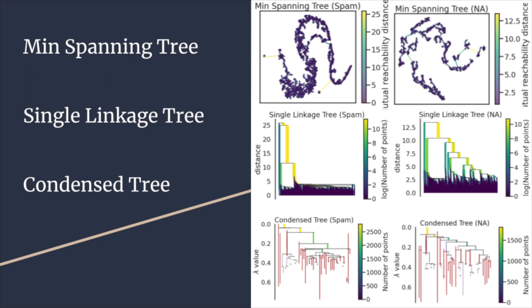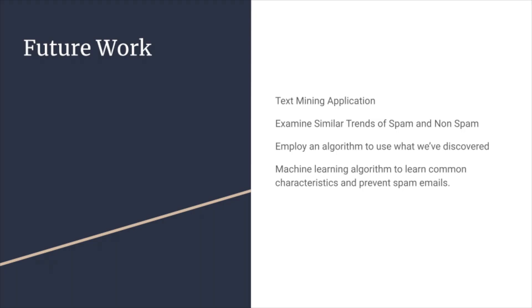The major takeaway for all of these trees is that since there are noticeably fewer branches within all the trees for the spam emails, data points must be more tightly clustered with having fewer outliers. This is beneficial because it shows that spam emails are more similar with one another as opposed to the non-spam emails. Just talking about some future work that we'd like to do. Thank you for listening.